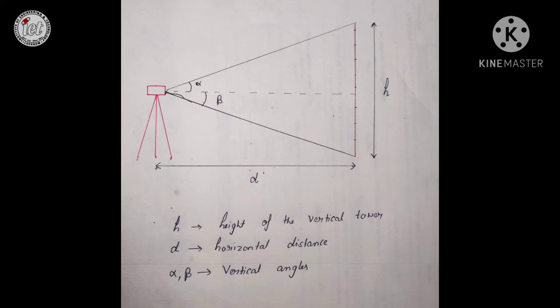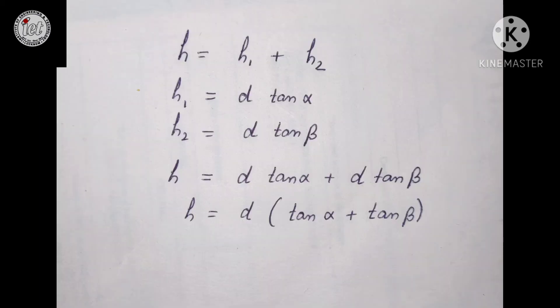H is the height of the vertical structure and D is the horizontal distance between the bottommost point of the structure and the instrument. When we look at the topmost point of the structure, the angle we observe is beta, and the lower angle is alpha. H is the unknown value; all we know is the horizontal distance D and the angles alpha and beta. Using trigonometry, we can calculate H. We break H into two parts, H1 and H2 — H1 with respect to angle alpha and H2 with respect to angle beta. Using tan alpha and tan beta, we find H1 and H2 in terms of D and the angles, then add them to get the final height of the vertical structure.